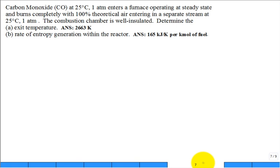Let's solve this problem. We have carbon monoxide at 25°C, 1 atm under standard conditions entering a furnace operating at steady state. It burns completely with 100% theoretical air entering in a separate stream at 25°C and 1 atm. Right away they're going to get mixed inside the combustion chamber.